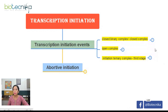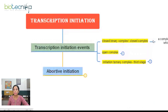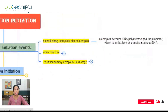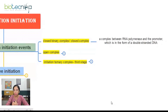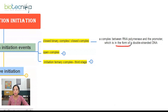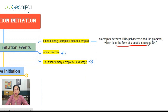Let us see what we mean by closed binary complex. When transcription has to begin, RNA polymerase will be binding at the promoter sequence on the DNA. The formation of the complex between RNA polymerase and the promoter, which is in the form of a double-stranded DNA — RNA polymerase has bound to the promoter, but DNA is still a double-stranded structure. This complex is known as the closed complex.